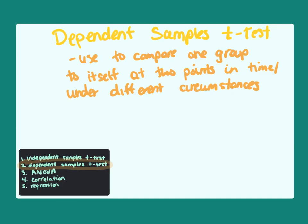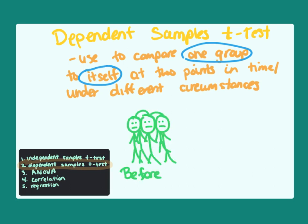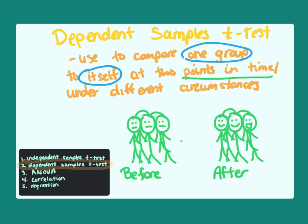The dependent samples t-test, also known as a paired samples t-test, is used in a different kind of scenario. When we want to compare one group to itself at two different points in time — like before or after an intervention — or compare the group under different circumstances, we use the dependent samples t-test. The key component is that it's one group being compared to itself. Suppose I hypothesize people will be happier with their job after getting a raise compared to before; I'd assess the same group at two different points in time.